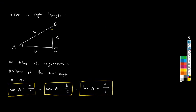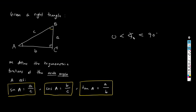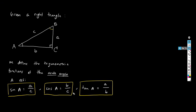These are the definitions of sine, cosine, and tangent. I'm using the word 'acute angle' — an acute angle is one between 0 and 90 degrees. The two non-right angles in any right triangle must always be acute — they have to be less than 90 degrees. That's a property of right triangles, not just something I'm asserting.